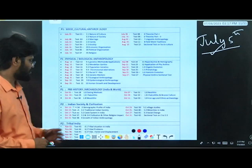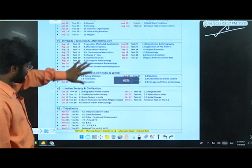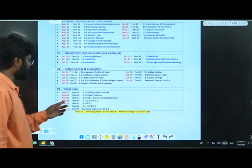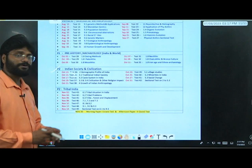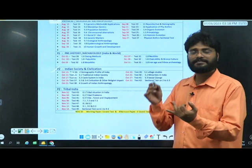Tribal India - similarly, tribal India also you will get test numbers like: tribal situation in India as one unit test, tribal problems as one unit test, tribe forest and displacement problems, covering 7.1, 7.2, 7.3, then 8.1 and 8.2, then 9.1, 9.2, 9.3, followed by sectional test on tribal India. This is the way - first you will write all the unit tests followed by sectional tests and followed by grand tests.